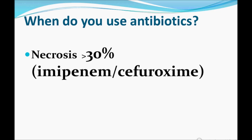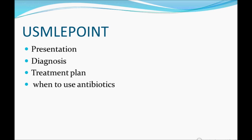When do you use antibiotics? If the CT scan of the abdomen shows necrosis of more than 30%, start antibiotics. In USMLE, they may give you a history and ask: the CT abdomen shows 35% necrosis — what is the next best step? Antibiotics such as imipenem or cefuroxime can be used.